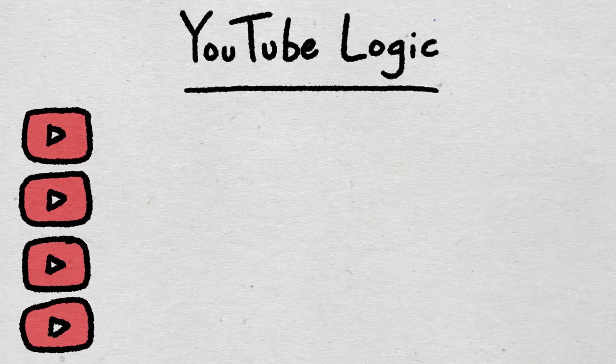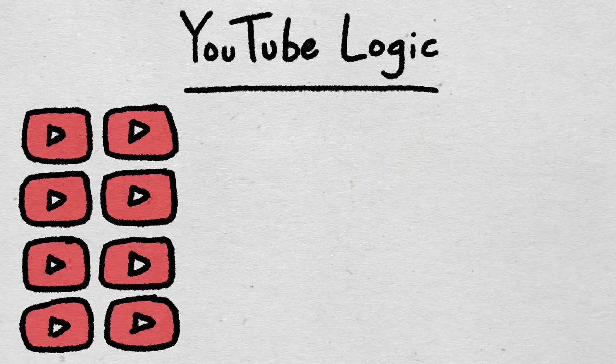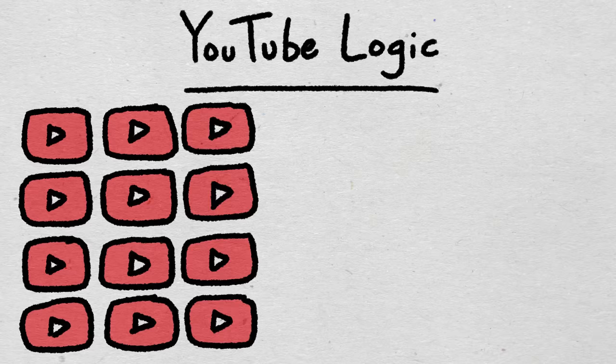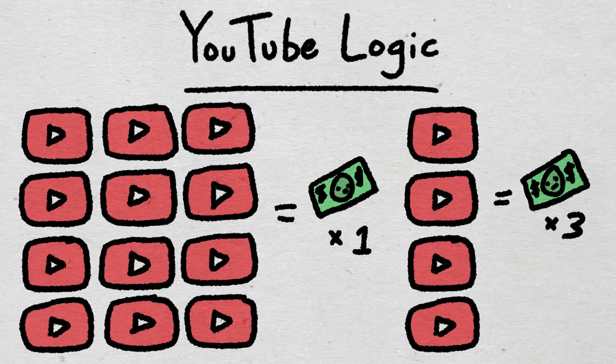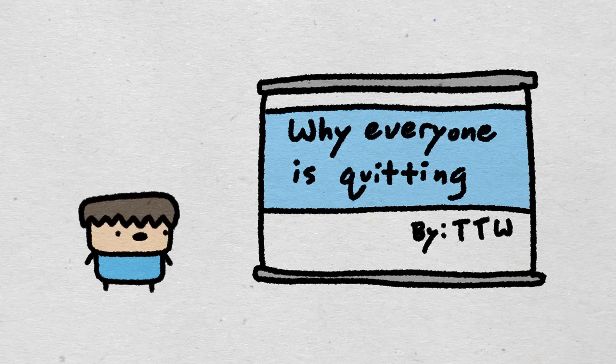But on YouTube, you can go from making 4 videos a month to making 8 videos a month or even 12 videos a month and make even less money than when you were making 4 videos a month. So now knowing that information, it makes sense why people are quitting or switching what they're doing.